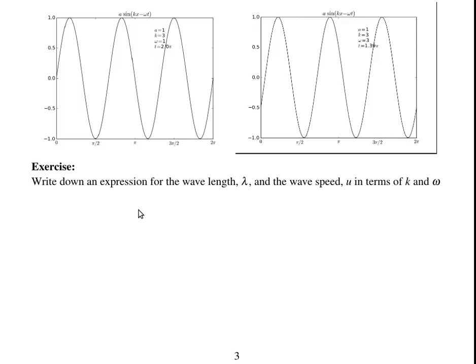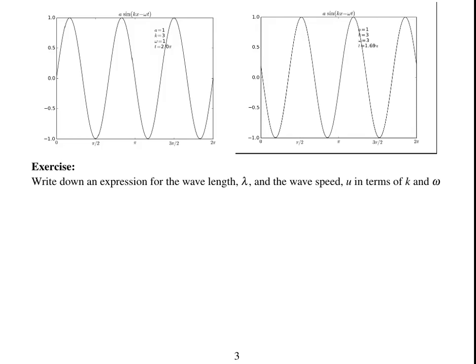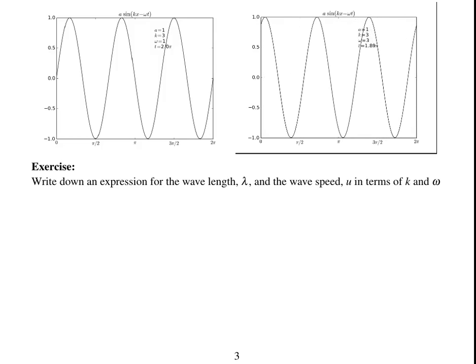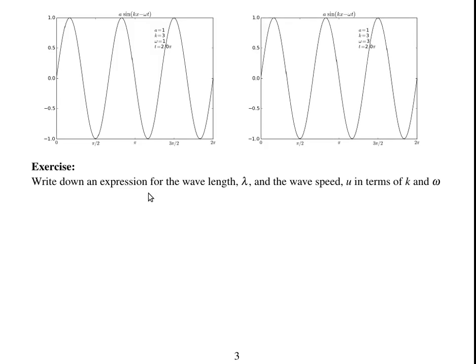So thinking about, looking at the way waves behave, and thinking about the wave number and the wave frequency, I would like you to try and write down two expressions. One for the wavelength of the wave, in terms of the wave number k and the frequency omega, and the other for the wave speed. If you want to check your answers, you can download the lecture version of the notes for this video.